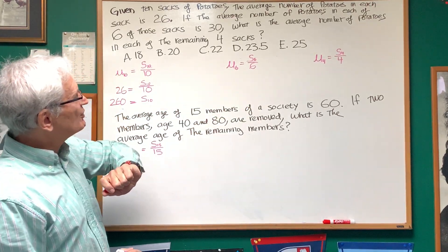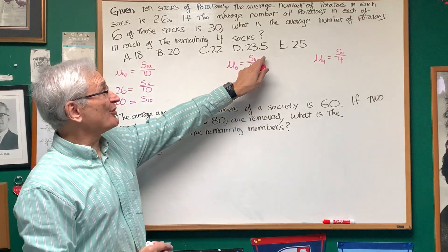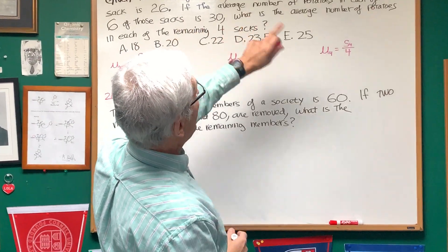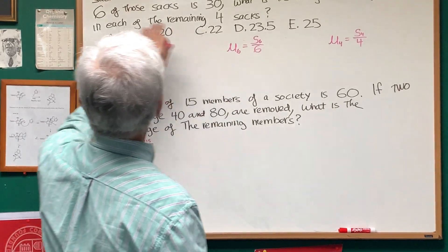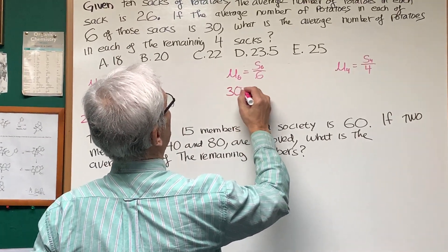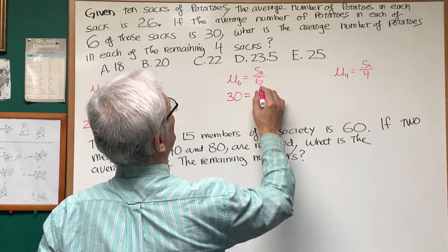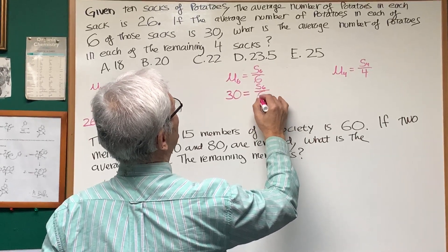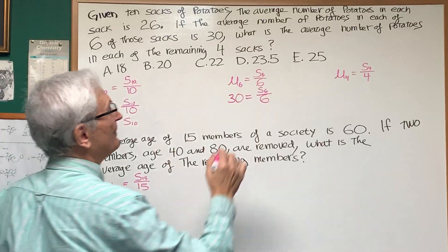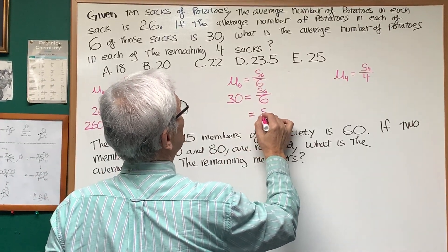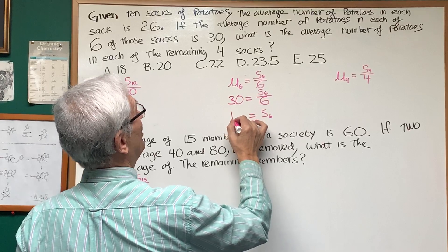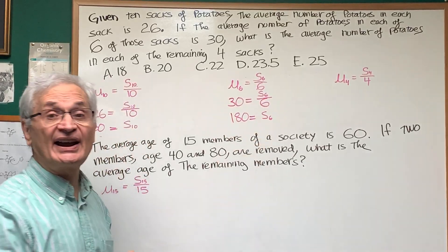Now let's find out what the total number of potatoes is in those 6 sacks. It says the average number of potatoes in each of those 6 sacks is 30. So the sum of the potatoes in those 6 sacks divided by 6 equals 30. That means the number of potatoes in those 6 sacks is 6 times 30, or 180.